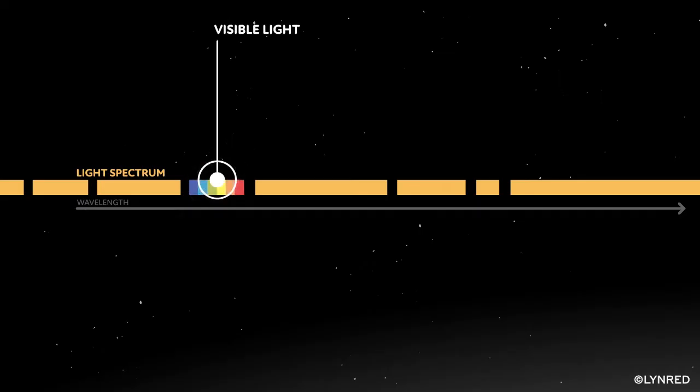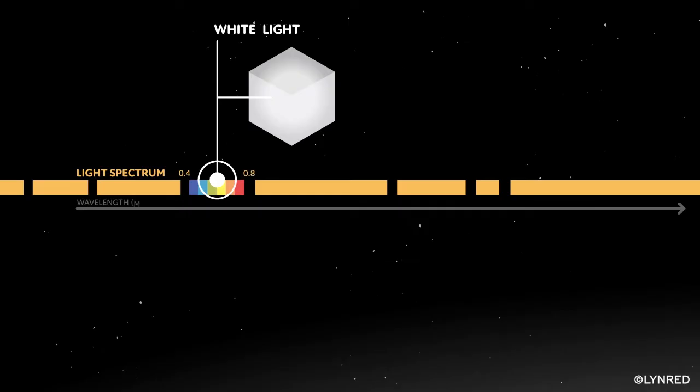Visible light, also called white light, ranges from 0.4 to 0.8 micrometers. White light is mainly emitted by the sun.